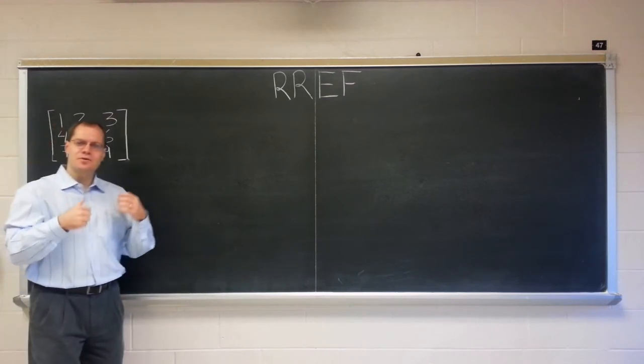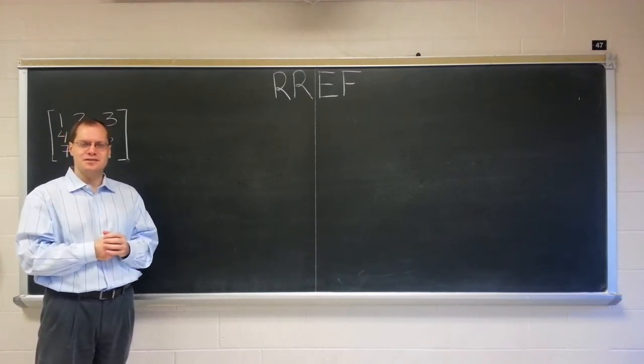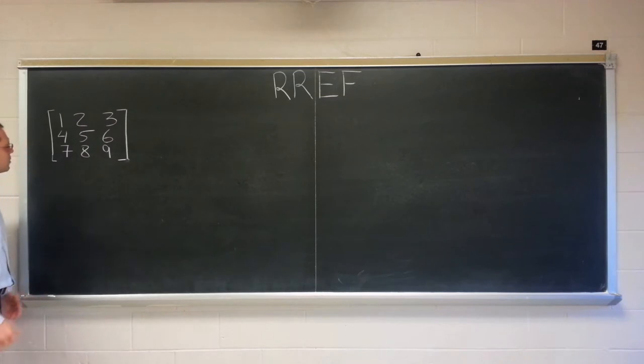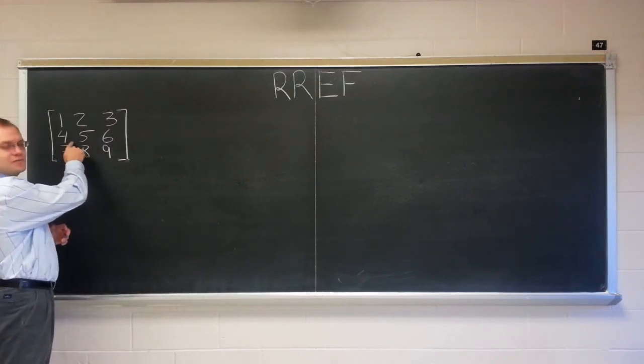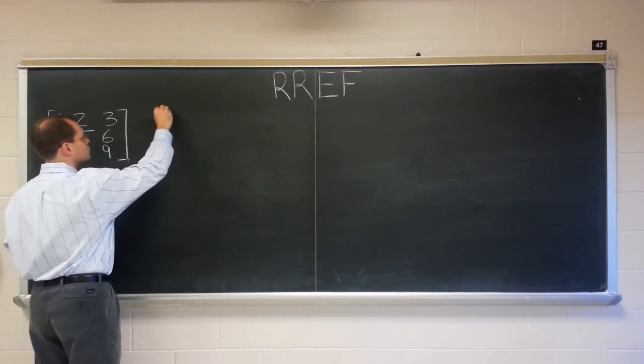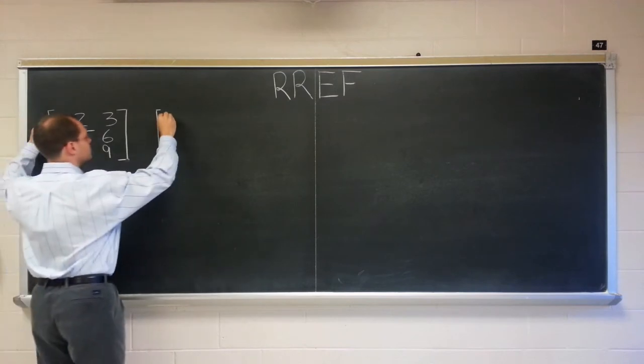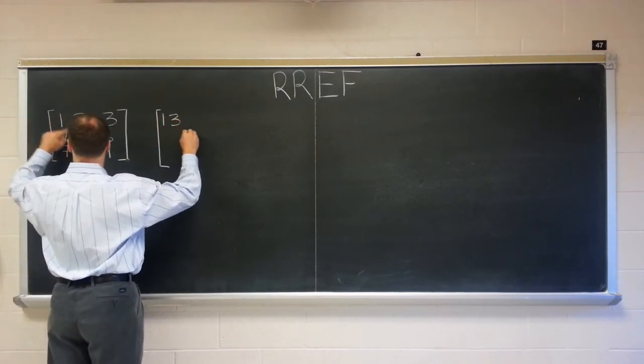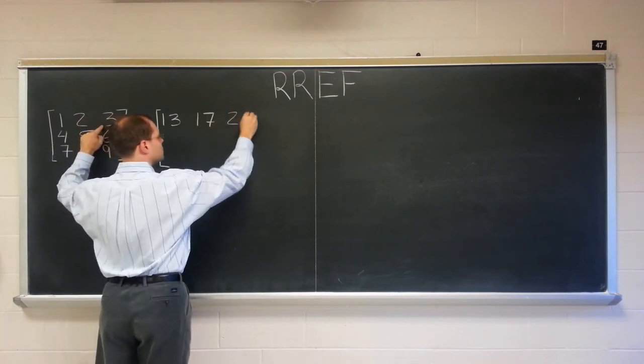Now, let's perform some row operations, the types of row operations that you use in Gauss elimination on this matrix. For example, let's do something crazy. Let's add three of the second row to the first, so we would get three of the second row to the first. We would get thirteen, seventeen, twenty-one,